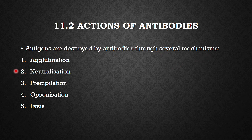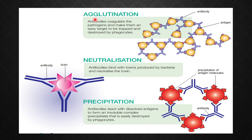Those mechanisms are agglutination, neutralization, precipitation, opsonization, and lysis. Let's look at agglutination. This is the antibody — it's like a Y-shape — and on the cells here, these are the antigens. These antibodies will coagulate the pathogens, meaning they clump together. The specific antigen complements with the specific antibody.